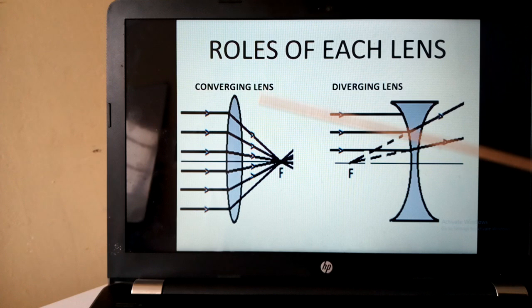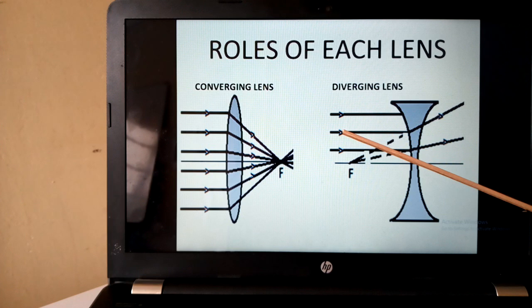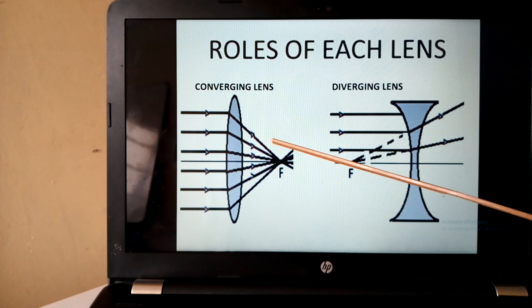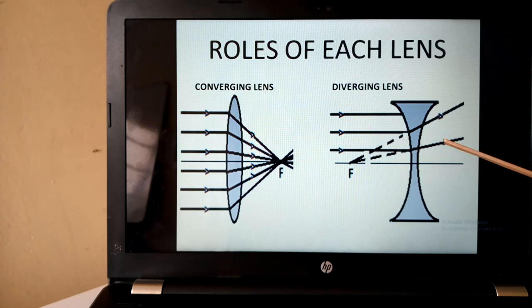On the other hand, if you look at this second type, when rays come upon it, they are moved apart. Here they were made to come together. Here they are moved apart. And as such, we call it diverging lens, that is concave lens.